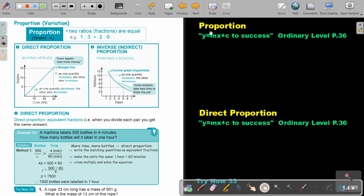In this video, we are going to look at proportion. You will find this on page 36 in the Namibia Ordinary Level Mathematics textbook, y equals mx plus c, two sixes. Proportion, and this is the symbol.